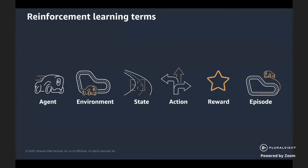For every state, the agent needs to take an action to try and achieve its goal of making a lap. Depending on which action it takes in a given state, it will be given a reward or not. If the chosen action gets the agent closer to the goal, you reinforce this action through a positive reward; otherwise, you discourage it with a negative reward or no reward at all. This reward is provided by the environment and specified through what we call a reward function — code written to incentivize behavior through parameters defined by the creator of the environment.